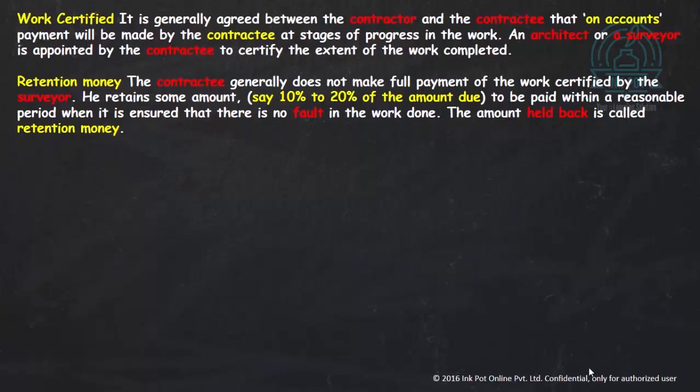Retention money: whatever work is certified by the architect, the contractee must pay that amount to the contractor. However, the contractee never makes full payment — he retains some amount, say 10% or 20%, so that if there is any fault in the work, he can recover it from that retained amount. This withheld amount is known as retention money.